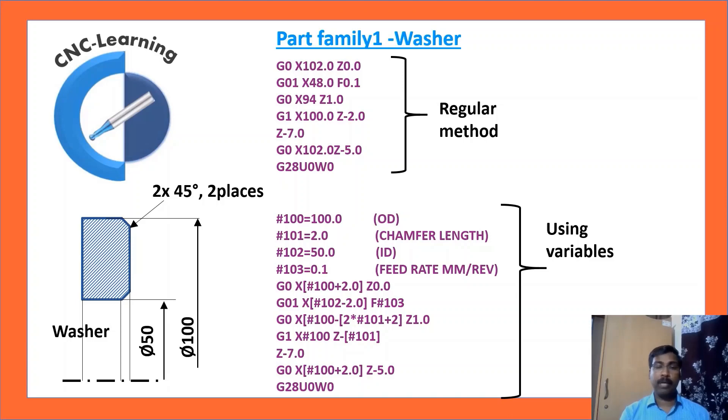So, you can compare this variable program and regular program. So, all the diameters are mentioned as a function of a variable. So, the diameter, wherever diameter is directly mentioned, directly calling that variable. And, wherever there is some calculation involved, reading that, calling that calculation. Now, whenever you want to make another part, just change the values of OD, ID, chamfer length and feed rate. That mean #100 to #103.